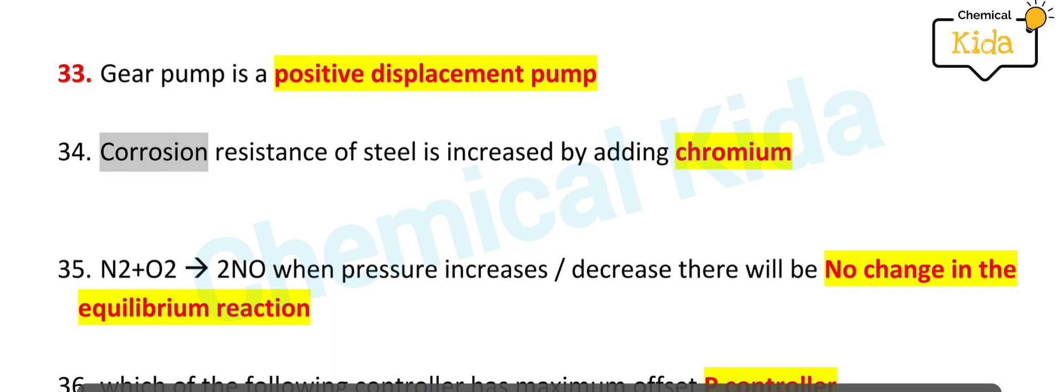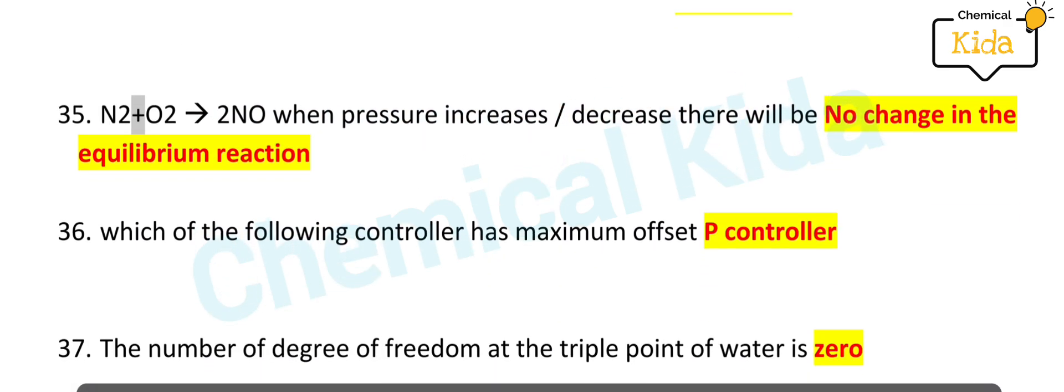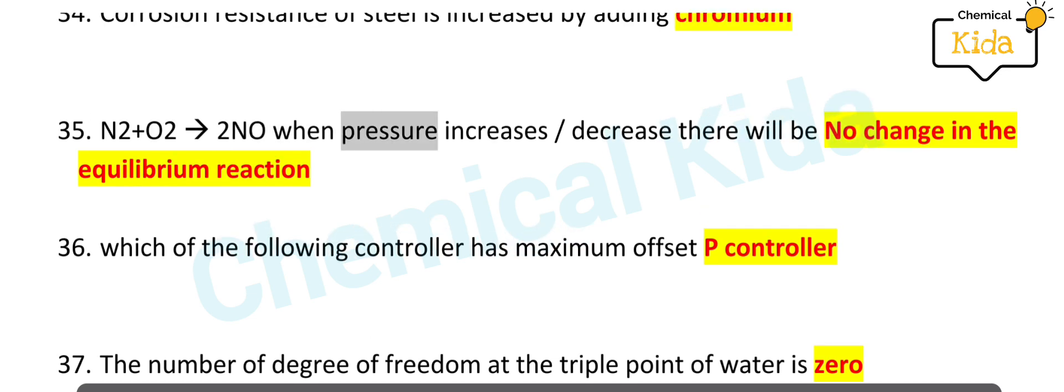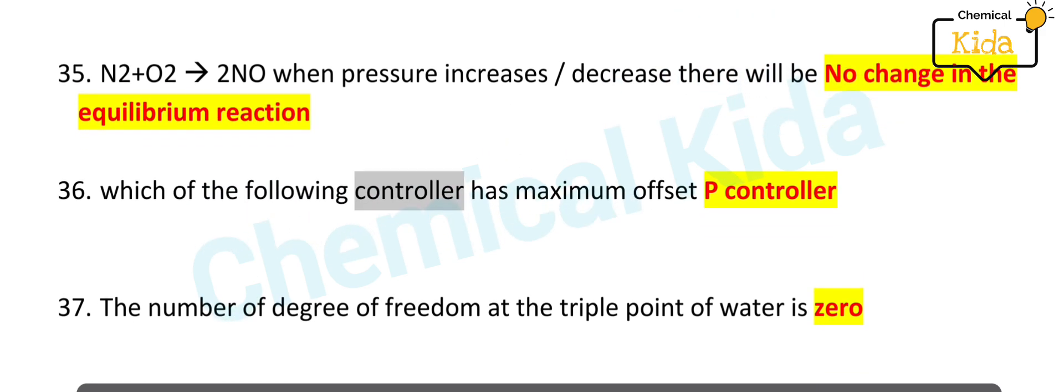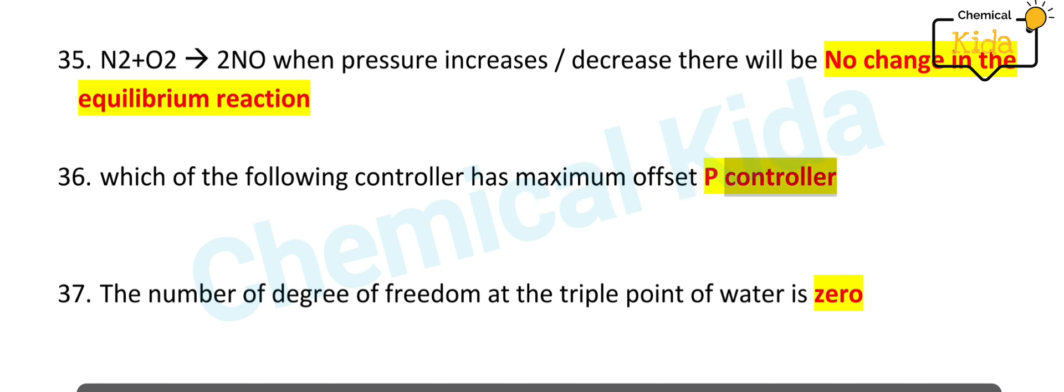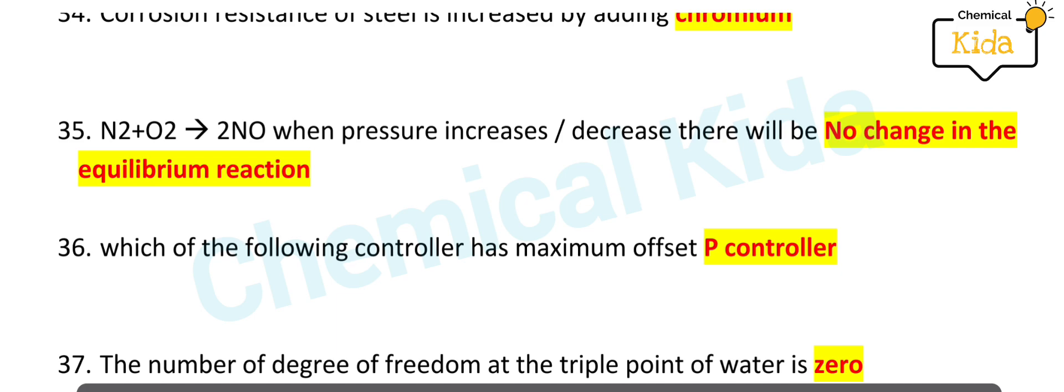Corrosion resistance of steel is increased by adding chromium. N₂ + O₂ → 2NO, when pressure increases or decreases, there will be no change in the equilibrium reaction. P controller has maximum offset. The number of degrees of freedom at the triple point of water is zero.